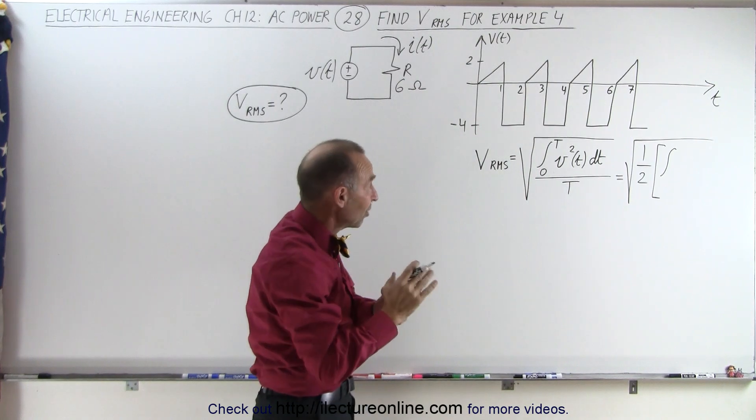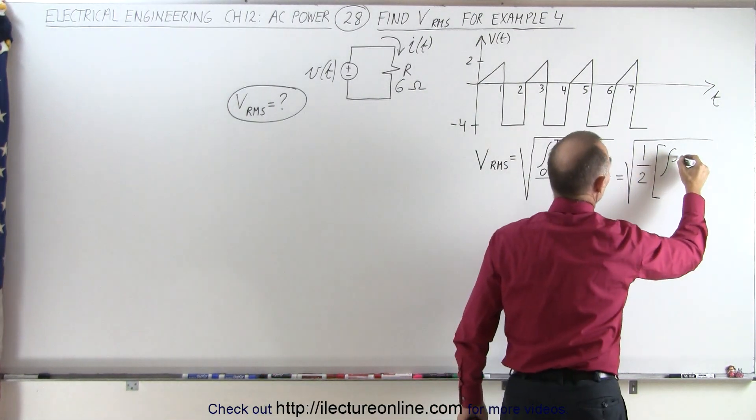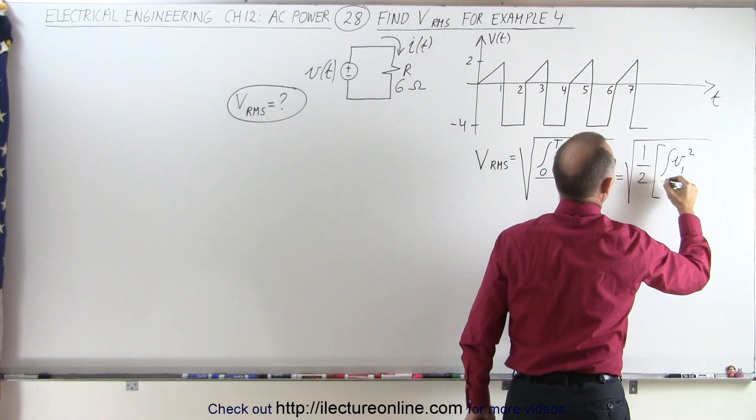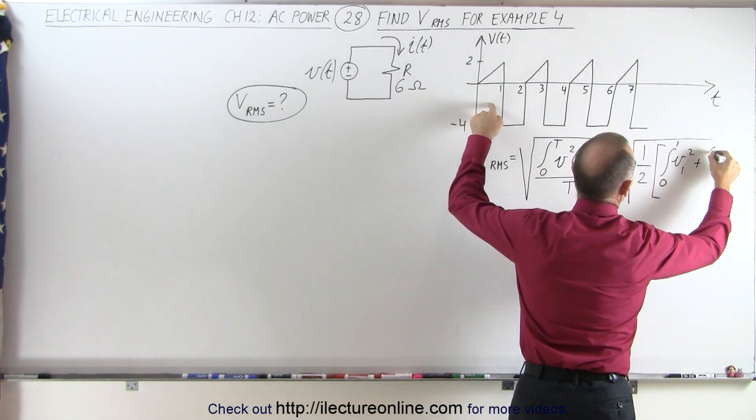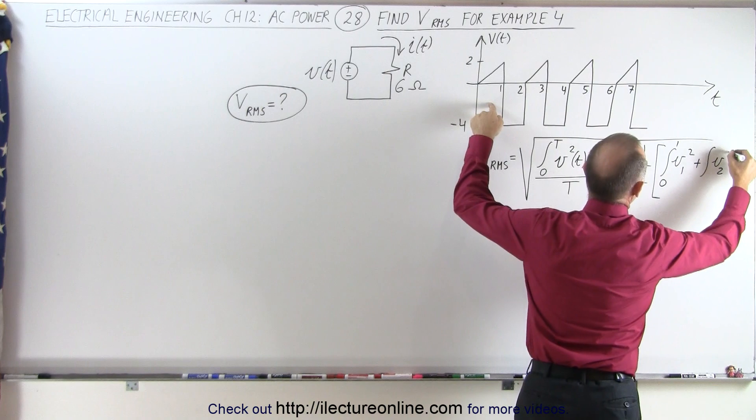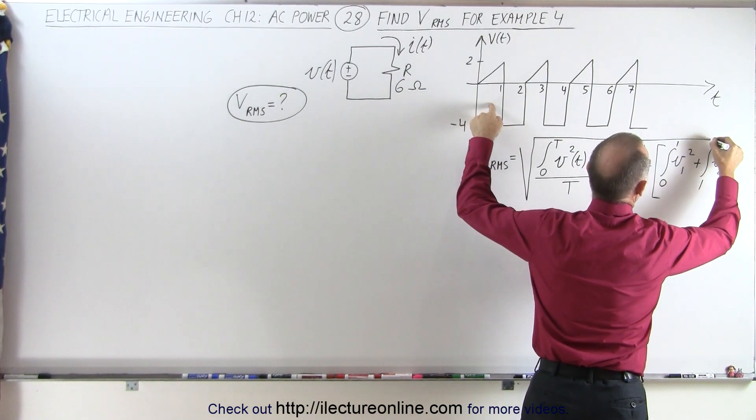Now here we have to take the two portions separately, so we're going to call this V1 squared from 0 to 1 plus the integral of V2 squared from 1 to 2.